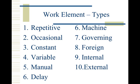An example of a machine element is a CNC machine that runs the same exact process each cycle. A governing element is the largest element in a concurrent cycle. An example of this would be boiling water for coffee — while you can set up cups, sugar, and everything else you need, you're still going to have to wait on the water to boil. A foreign element is one that is not expected to be in the study, such as a machine breaking down.